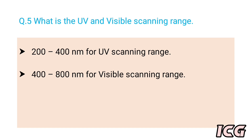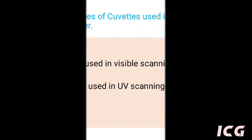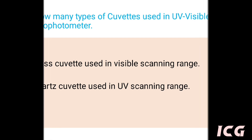The next question is: what is the UV and visible scanning range? The answer is for the UV scanning range, the limit is 200 to 400 nanometers, while for the visible scanning range, the limit is 400 to 800 nanometers.